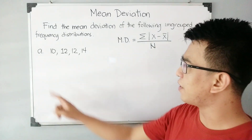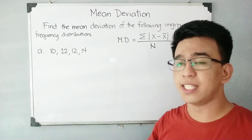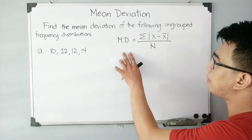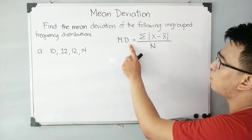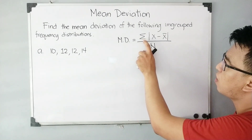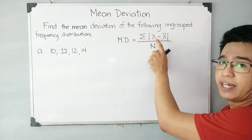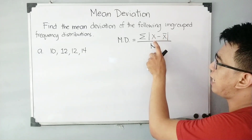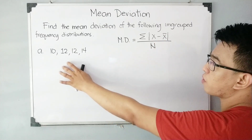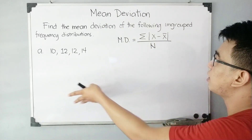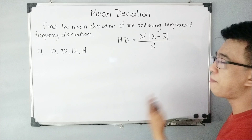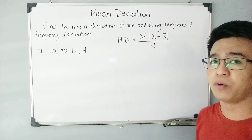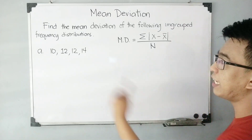So the given data set here is 10, 12, 12, and 14. To calculate for the mean deviation, we need to use the formula: MD, or the mean deviation, is equal to the summation of the absolute value of x minus x-bar over n. Your x variable represents the scores in your frequency distribution, while x-bar represents the mean of the given data set, and n is the number of scores or elements within the given data set.